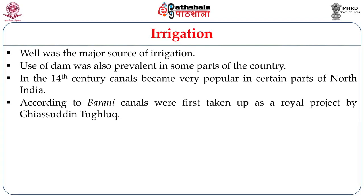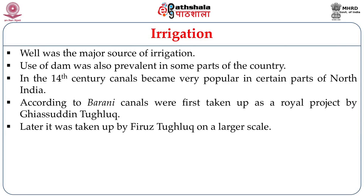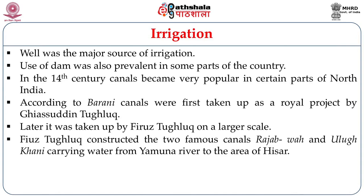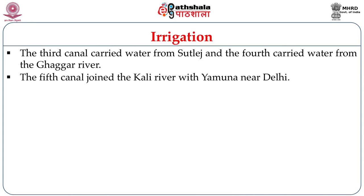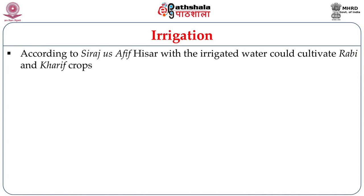According to Barani, canals were first taken up as a royal project during Ghiyasuddin Tughluq. Later, during Firuz Tughluq, canals were dug on a large scale. Firuz Tughluq constructed two famous canals, Rajabwa and Ullukhani, carrying water from the Yamuna river to the area of Hisar. The third canal carried water from the Sutlej, the fourth from the Ghaggar, and the fifth carried water from the Kali river to the Yamuna, connecting Delhi with the rest of North India. According to Sirajus Afif, Hisar with the irrigated water could cultivate both Rabi and Kharif crops — that is, summer and winter crops.